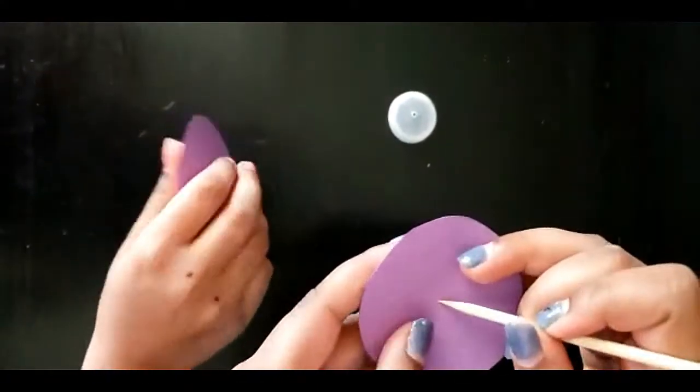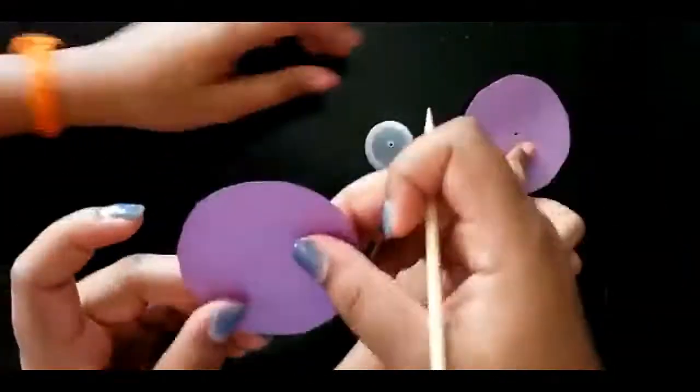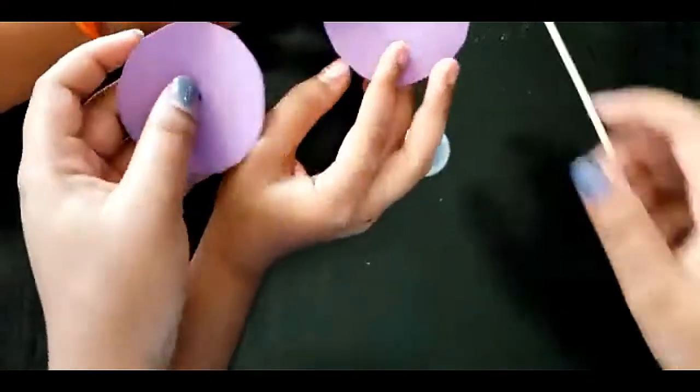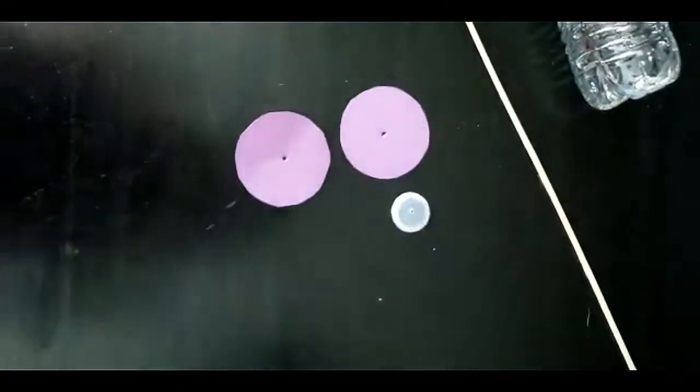Using the same skewer stick, poke a hole through the middle of the circles too. Now we have holes through all of these.